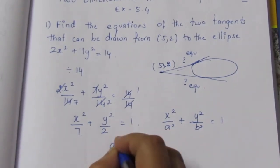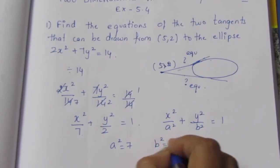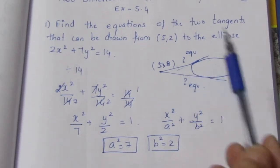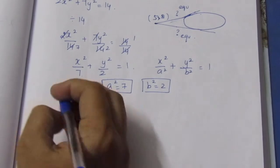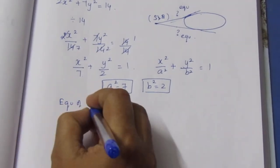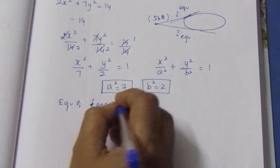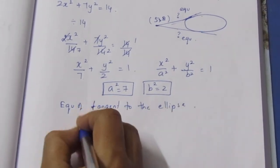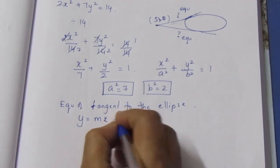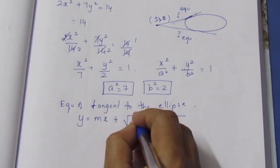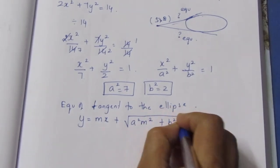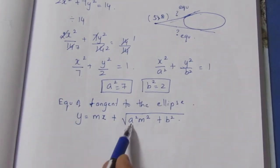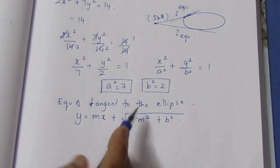So a² = 7 and b² = 2. The equation of the tangent to the ellipse is y = mx + √(a²m² + b²). This is the equation of the tangent to the ellipse, where m is the slope and a², b² are as identified.